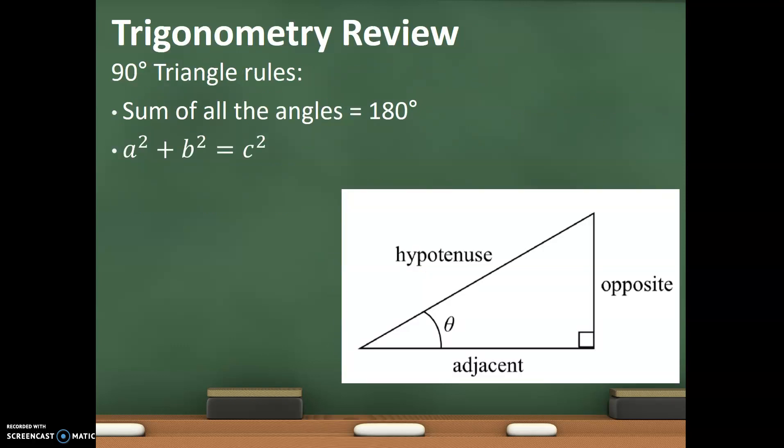Now, in this unit, we're going to be talking a lot about trigonometry, so we're going to have to do some review on it. It's not hard trig, it's just a little bit. So, first off, sum of all the angles is equal to 180 degrees. That's an easy one. And then we have Pythagorean's Theorem, that a squared plus b squared equals c squared. That means that the adjacent squared plus the opposite side squared is equal to my hypotenuse squared.